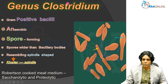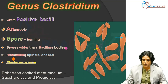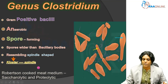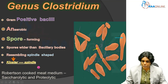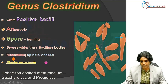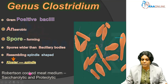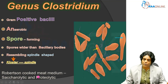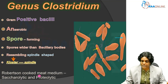Closter means spindle and that's why this is called Clostridium. The medium that we use to cultivate these bacteria is Robertson's cooked meat medium, which has meat particles. Based on the compound that it uses, they are classified into sacrolytic bacteria and proteolytic bacteria. Those bacteria which act on carbohydrates turn the meat into pink color and are called sacrolytic bacteria, while some species act on the proteins present in the meat and are called proteolytic bacteria.